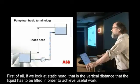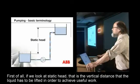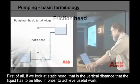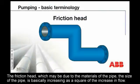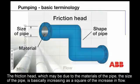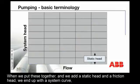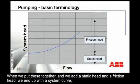If we look at static head, that is the vertical distance that the liquid has to be lifted in order to achieve useful work. The friction head, which may be due to the materials of the pipe or the size of the pipe, is basically increasing as a square of the increase in flow. When we put these together and add the static head and the friction head, we end up with a system curve.